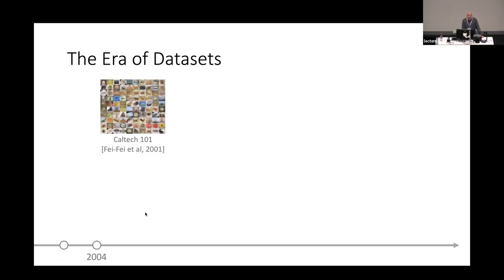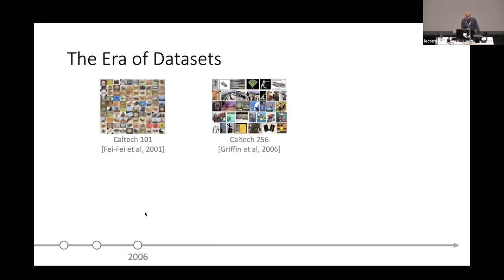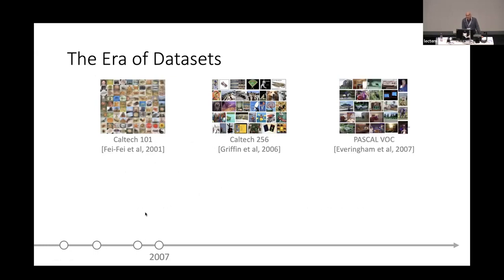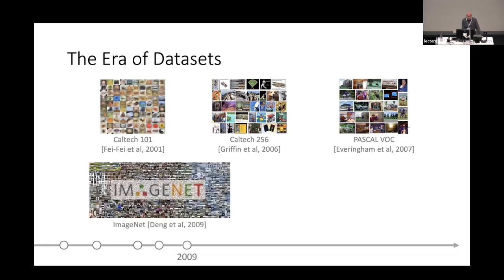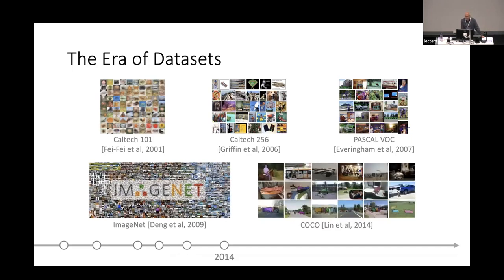Then there's this whole era of datasets. At Caltech, there was a dataset called Caltech 101, done by Fei-Fei, who was a graduate student of Pietro Perona. Then it moved to Caltech 256. Then there was the Pascal challenge, created around 2007, based on images with object annotations. Then ImageNet, done by Fei-Fei when she became a faculty member — think of it as going from Caltech 101 to Caltech 256 to Caltech 1000 or 10,000 in that spirit. And then we have COCO. The computer vision community's progress in the last 20 years has been defined by datasets and benchmarks — datasets provide training data and a measure for comparing approaches.